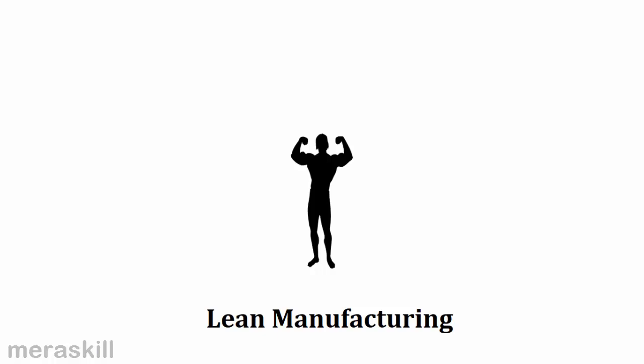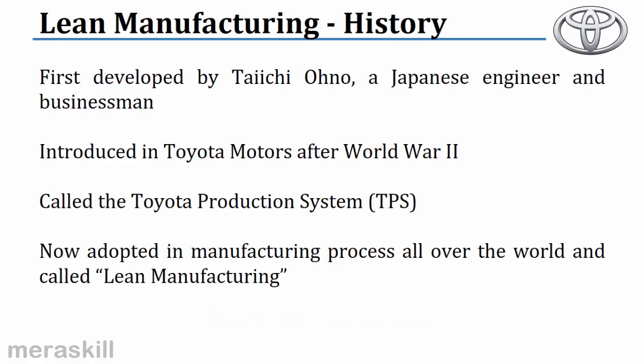Lean manufacturing in its original form was actually introduced in Toyota in Japan. Taichi Ohno was a Japanese engineer and businessman. When he took up a job in Toyota, around after World War II, Toyota's production was way behind that of Detroit in the USA and he was asked to improve its productivity and match it to that of Detroit's. Taichi Ohno visited the US and noticed in a supermarket that whatever was consumed, whatever was taken out of the store, was immediately also replaced.